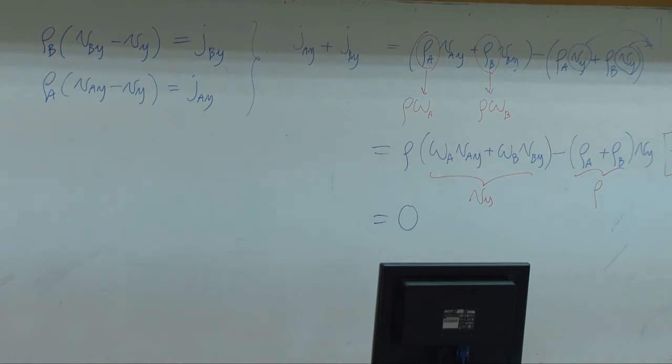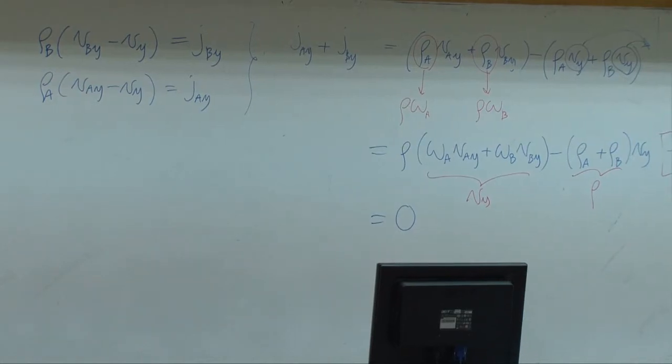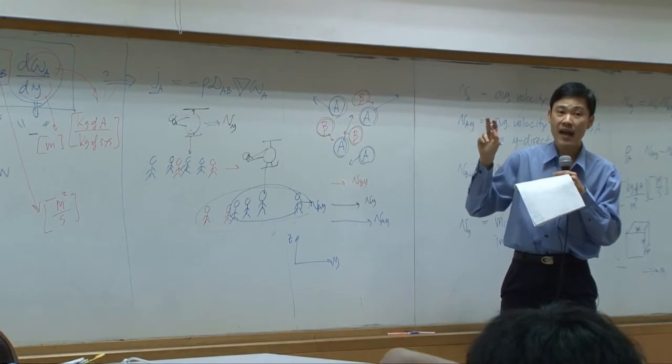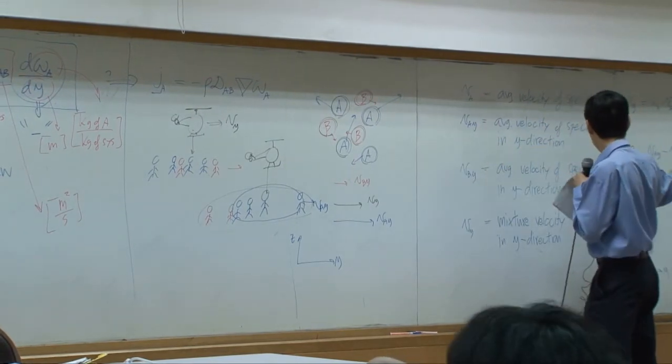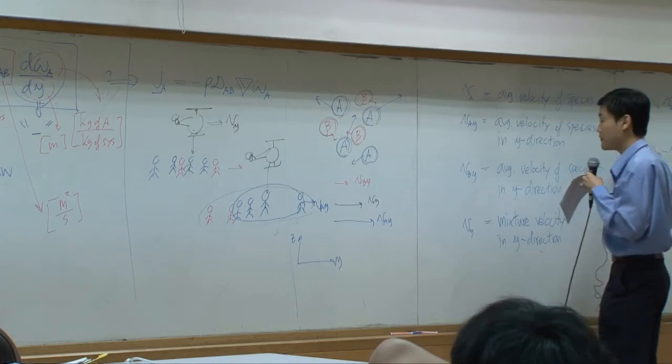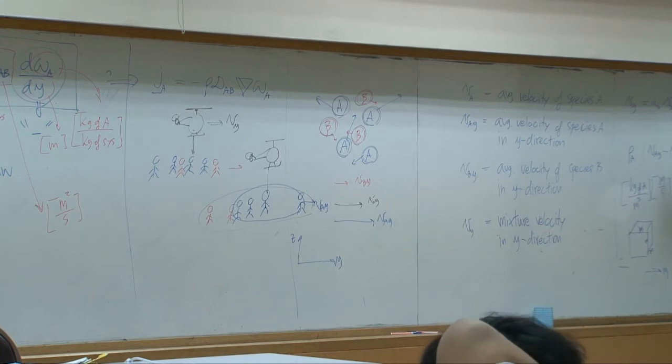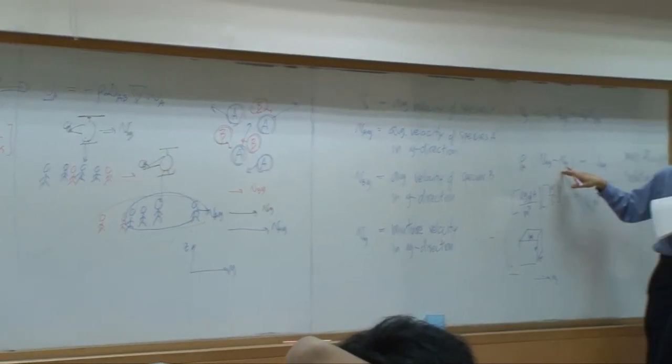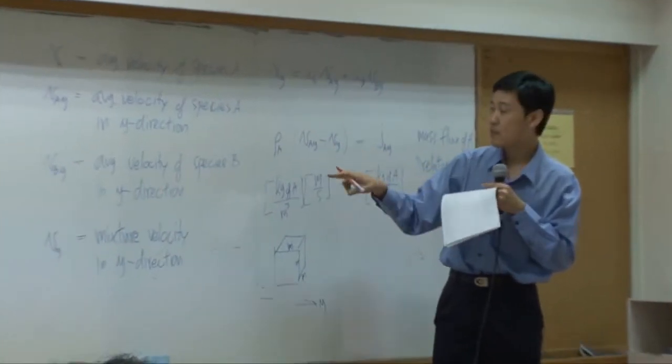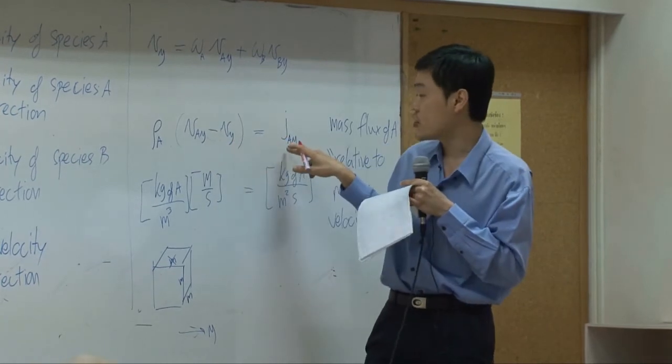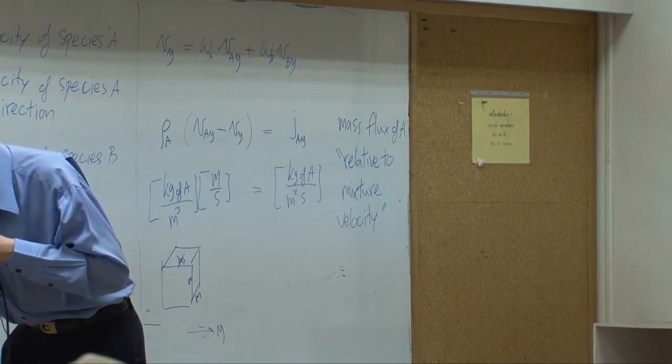In terms of vector, J A here, the J A there, supposed to be vector. Its direction here depends on difference of these two vectors. Right now, for this particular example, V A Y is faster than V Y. So therefore, J A Y is supposed to go in this direction.